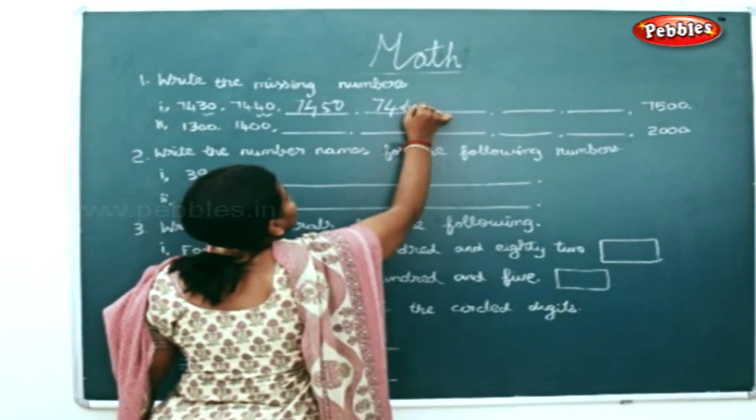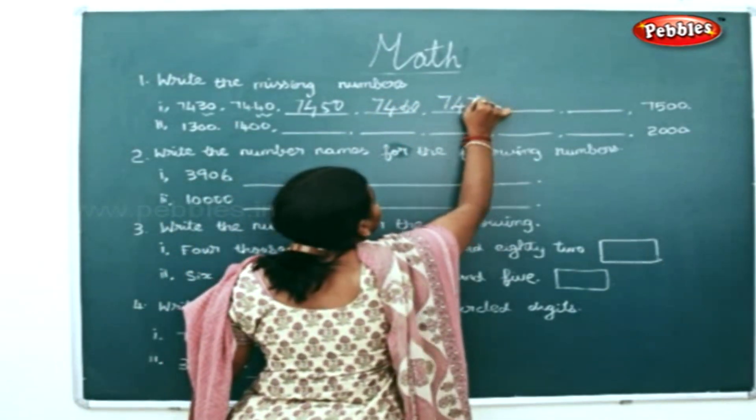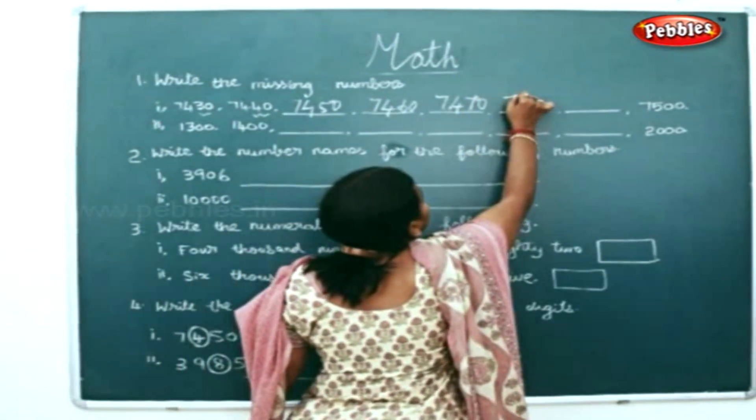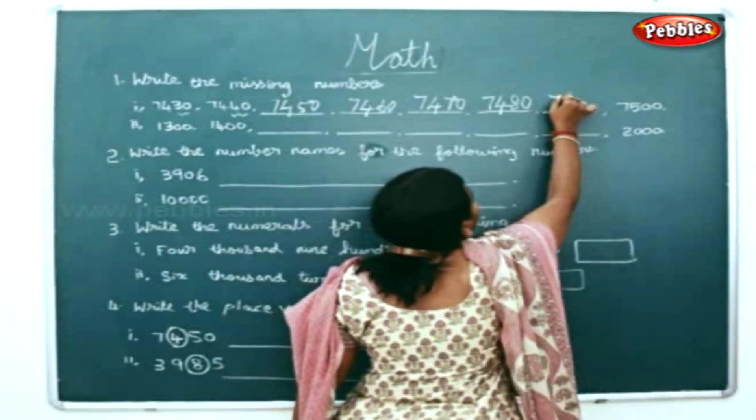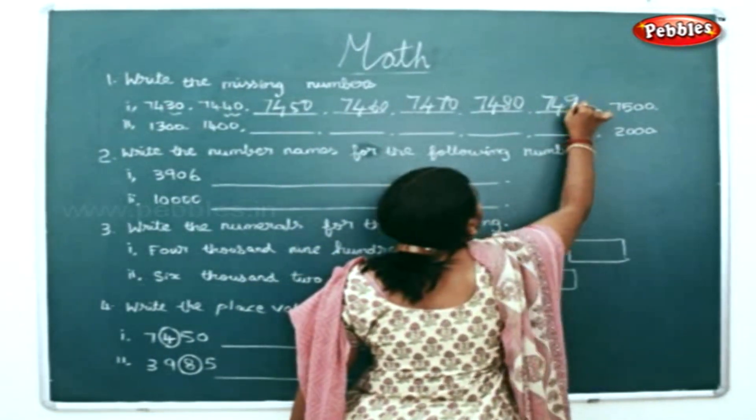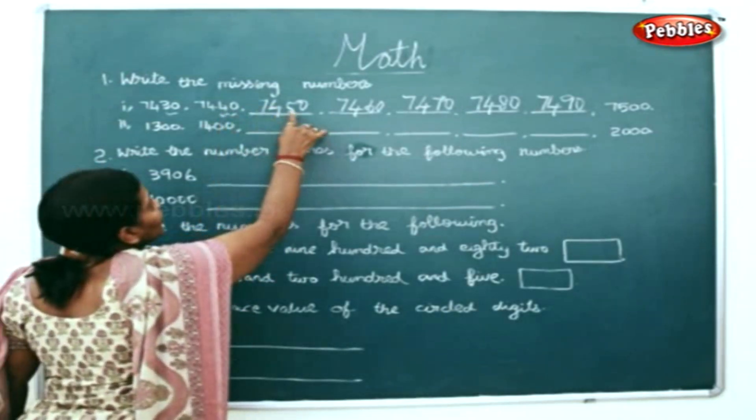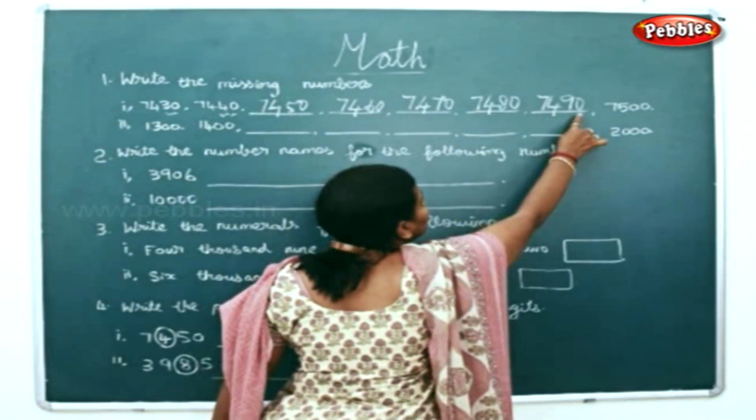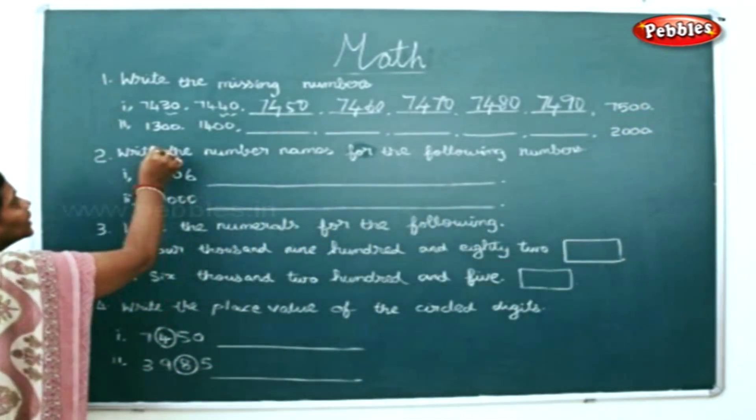Next 60, then 7460, 7470, 7480, 7490. So it jumped in tens - 40, 50, 60, 70, 80, 90, and 7500. Now here if you notice...